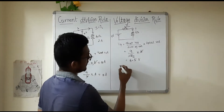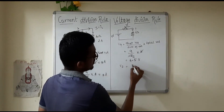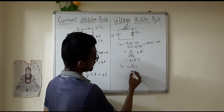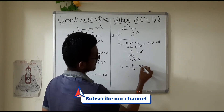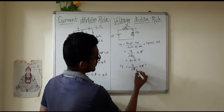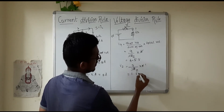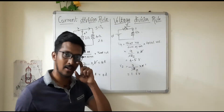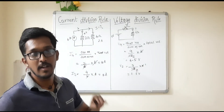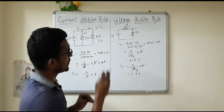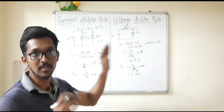So 4.5 volts is the voltage drop across the 9 ohm resistance. For the 3 ohm resistance: 3 divided by 12, into 6, equals 1.5 volts. The voltage drops across both resistances add up correctly to the total voltage.